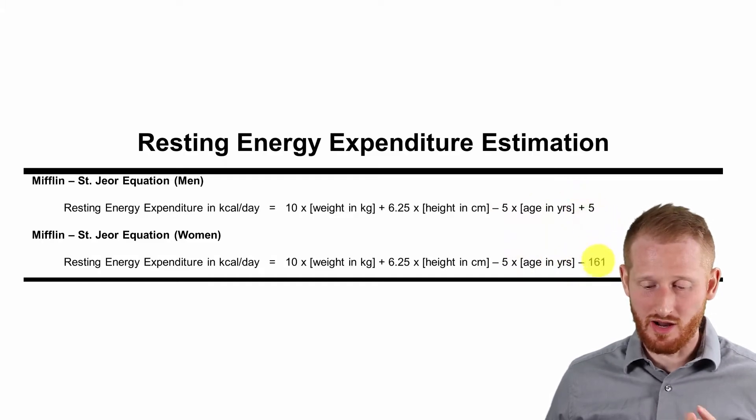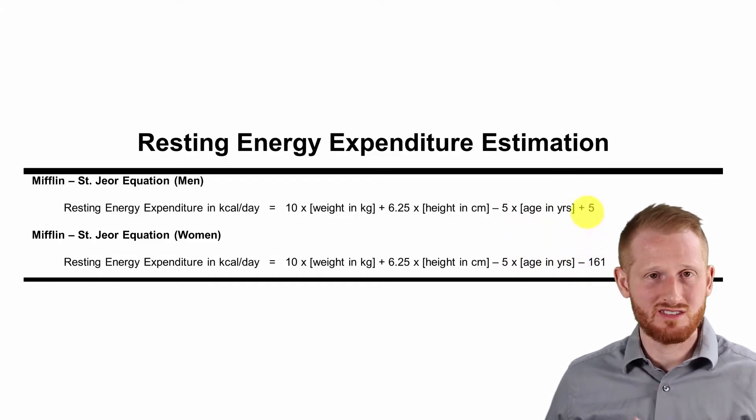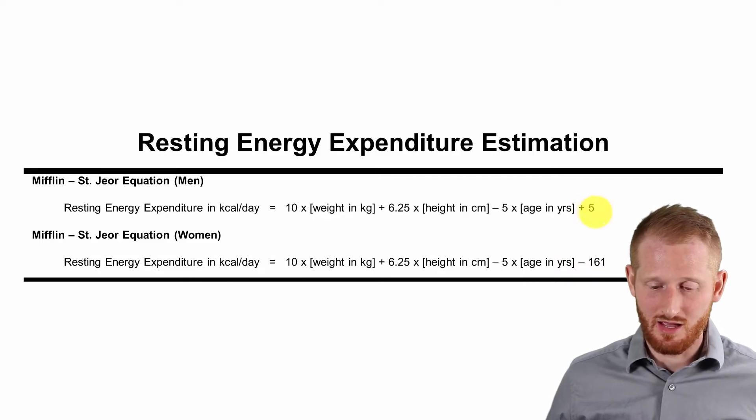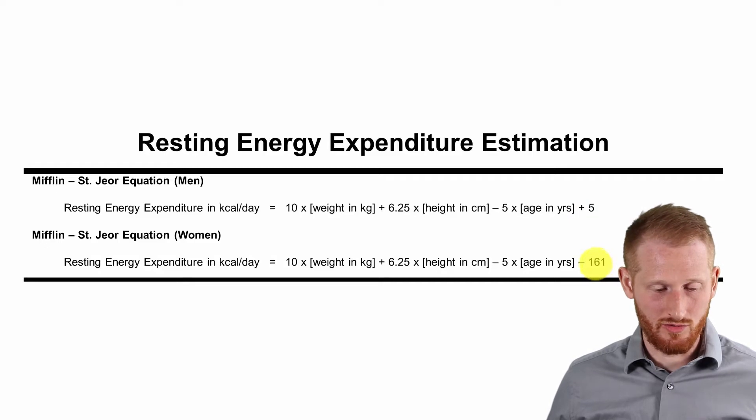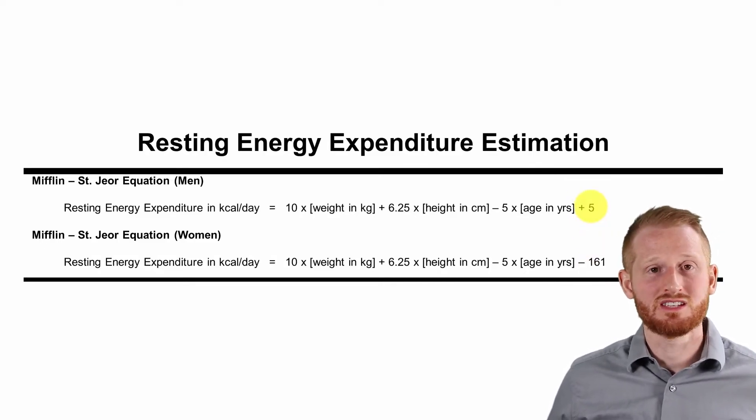And then we have our y-intercept values that these equations have at the end. For men, it's a plus 5. For women, it's a minus 161. So that is the only difference between the men's and women's Mifflin-St. Jeor equations.